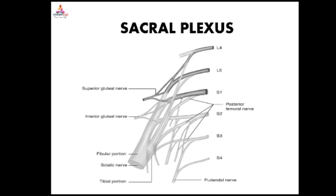The branches arising from a plexus are also termed peripheral nerves. The formation of a nerve plexus allows individual nerve fibers to pass from one peripheral nerve to another, permitting nerve fibers to travel within different peripheral nerves.